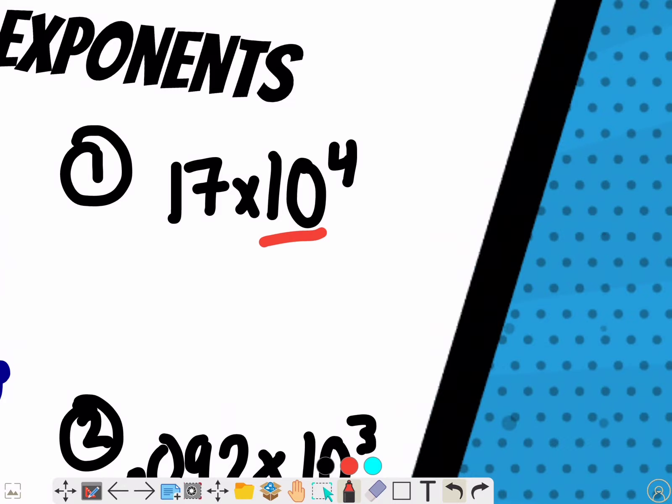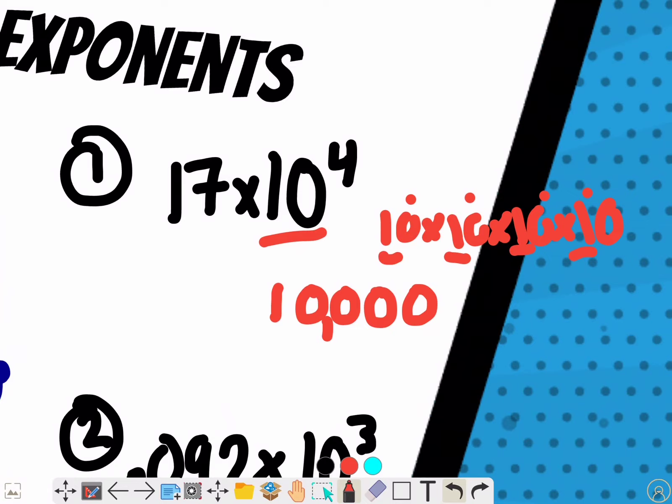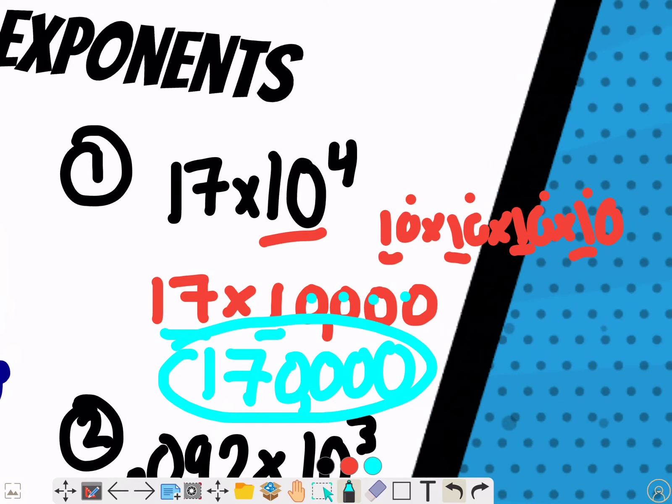First I need to break down ten to the fourth, which is ten times ten times ten times ten. That's one times one times one times one equals one with four zeros: one, two, three, four. So I'm multiplying seventeen times ten thousand, which gives me seventeen with four zeros - one hundred seventy thousand. That's my final answer.